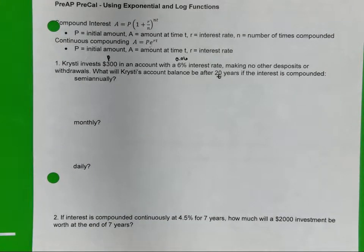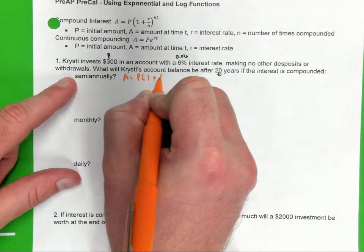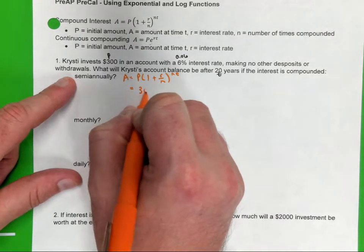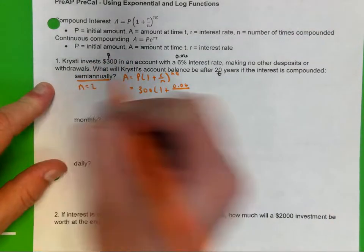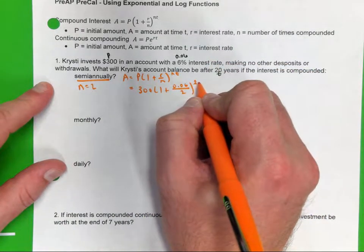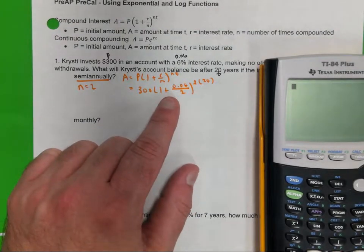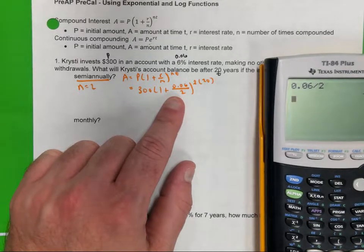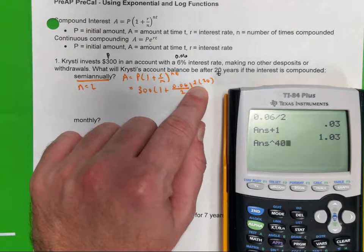All right, so it didn't say anything about continuously, so I'm going to be using this problem right here. A equals P times 1 plus R over N raised to the Nt. My P is 300. Since it says semi-annually, what will I plug in for N? 2. Now, guys, I'm going to show you how I plug all this in the calculator. 2 times, it said 20 years. Semi-annually is once a year. Semi, like a semi-circle is two parts. Semi-annually is two.